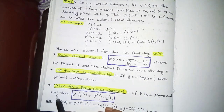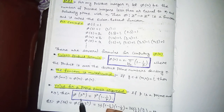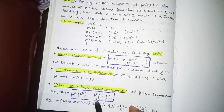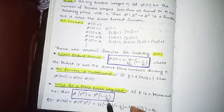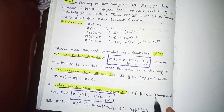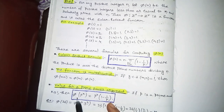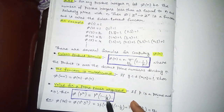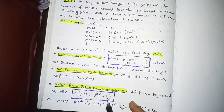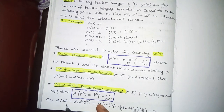The next formula gives the value for a prime power argument. If p is a prime and k ≥ 1, then φ(p^k) = p^k × (1 − 1/p). So whenever p is a prime number and k ≥ 1, φ(p^k) = p^k × (1 − 1/p).